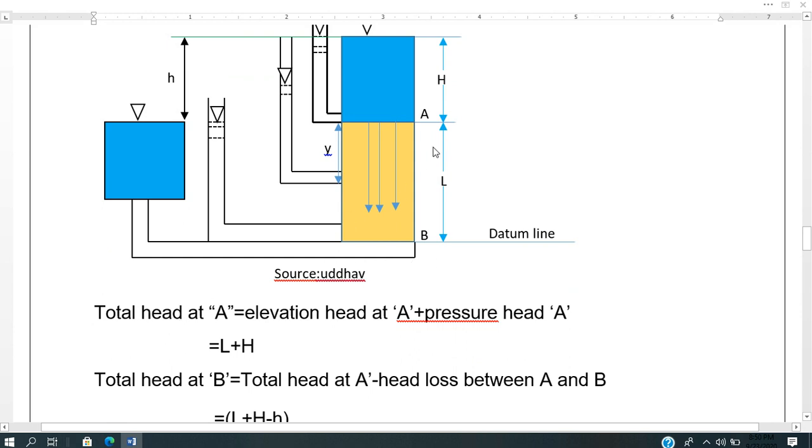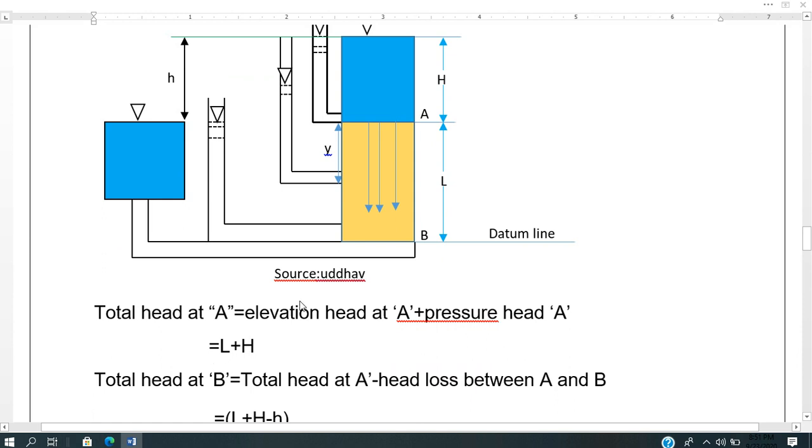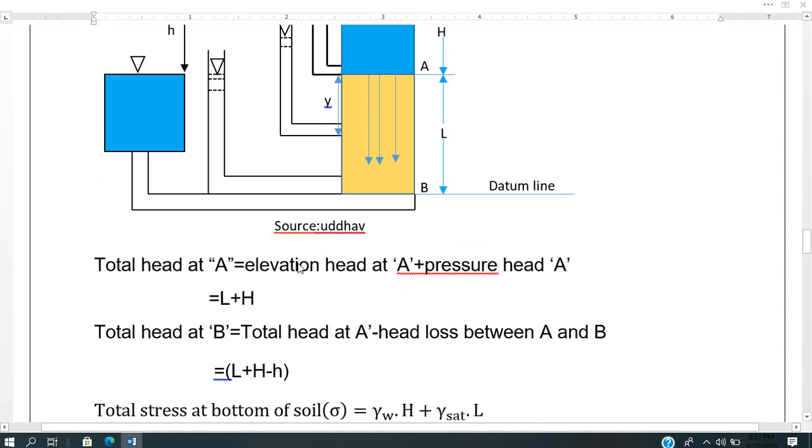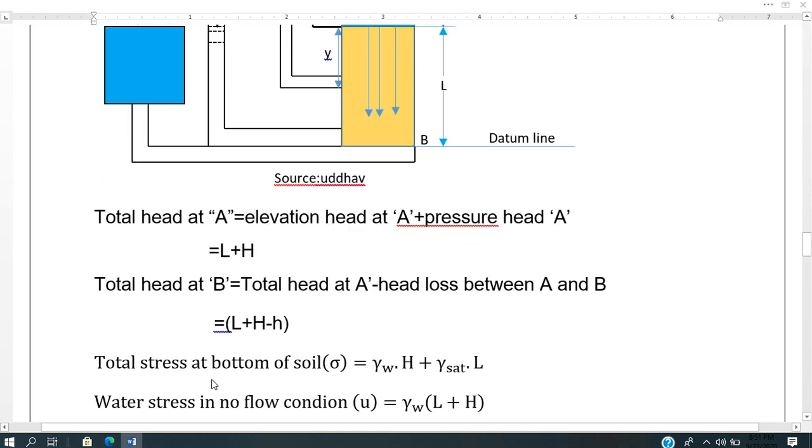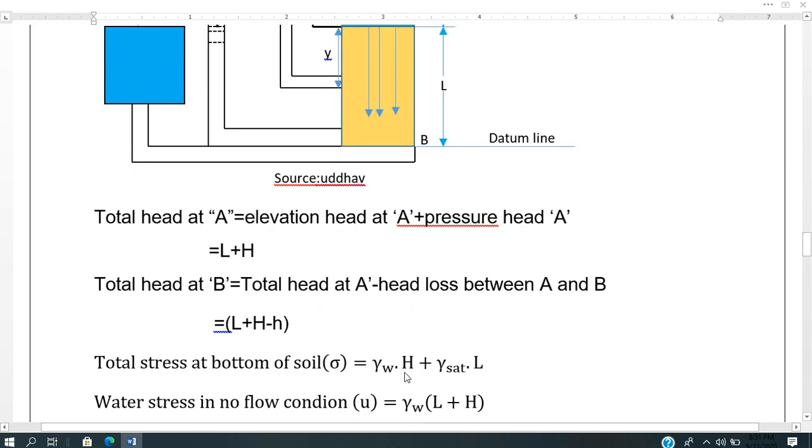Total head at A equals elevation head plus pressure head, which is L plus H. Total head at B equals total head at A minus head loss between A and B. Pressure head at B is L plus H minus h. Water stress at no flow condition is gamma W times H plus L.